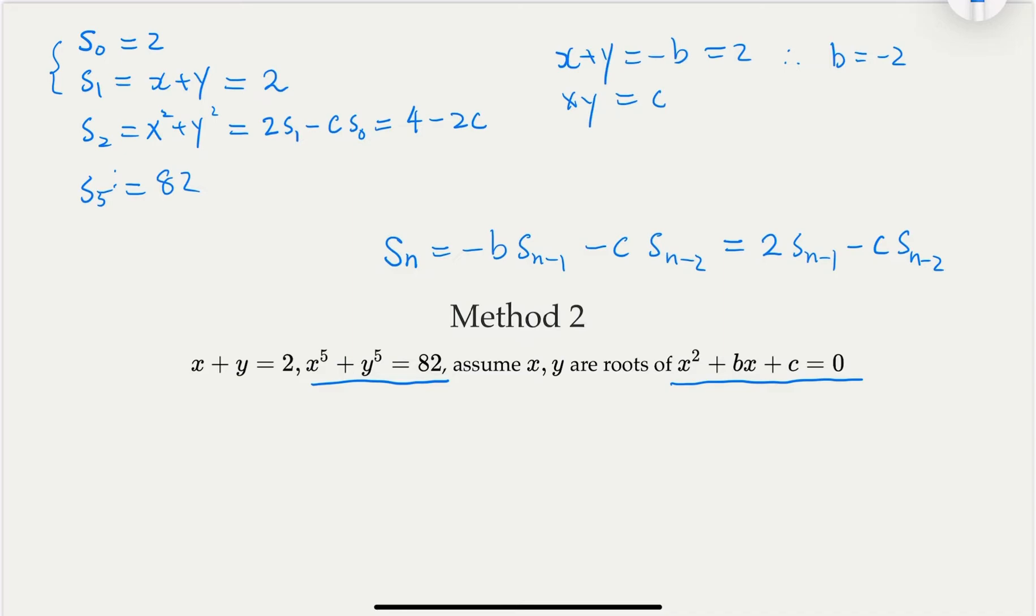s_3, and then in order to get s_5, we need to figure out what is s_3 first. So s_3 just use a space here. So s_3 would equal 2 times s_2 minus c times s_1. So 2 times s_2, s_2 we just got it 4 minus 2c times 2, that would be 8 minus 4c, minus c times s_1, s_1 is 2. So this equals 8 minus 6c.